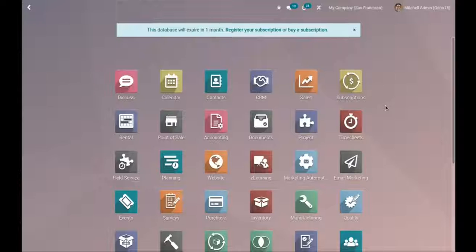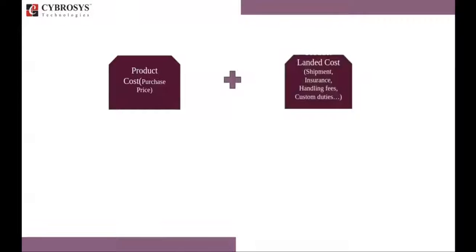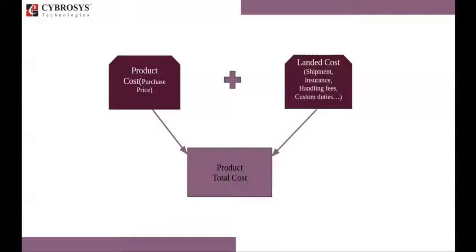Hello friends, today we'll discuss how to configure and add landed cost or additional cost to products in Odoo 15. The landed cost feature in Odoo allows you to include additional costs including shipment, insurance fees, and customs duties into the cost of the product. These landed costs can only be applied to products with FIFO or average costing method.